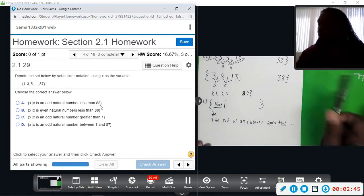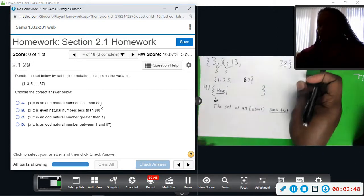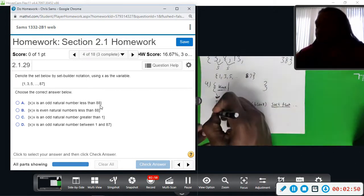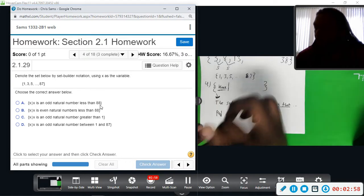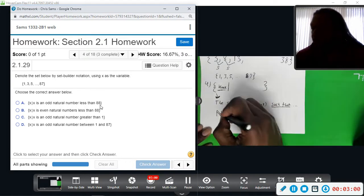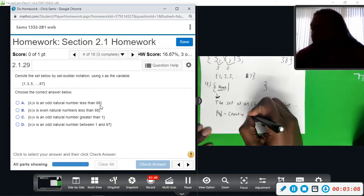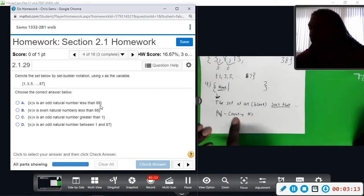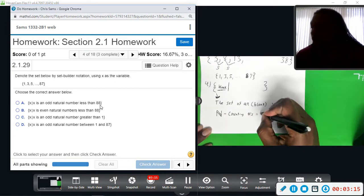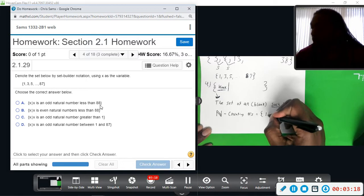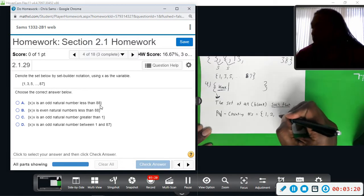So natural numbers - let me make a note of that because I haven't talked about that yet. Natural numbers are also called counting numbers, denoted with this bold face N. This is a symbol for natural numbers. I use the pound sign to abbreviate numbers. So natural numbers, or counting numbers, are the numbers starting with 1 and counting all the positive whole numbers.